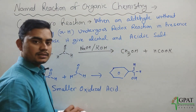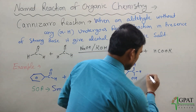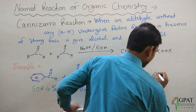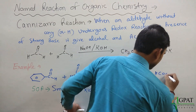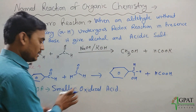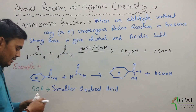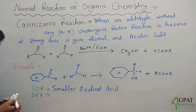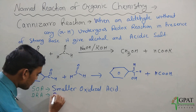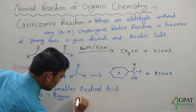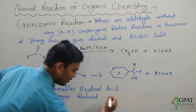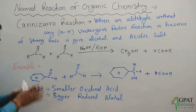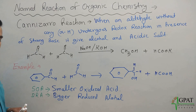So the resultant products are: benzyl alcohol (C₆H₅CH₂OH) from the bigger molecule being reduced (BRA: Bigger Reduced forms Alcohol), and formic acid (HCOOH) from the smaller molecule being oxidized. This is the Cannizzaro reaction and its example. Thank you.